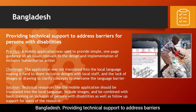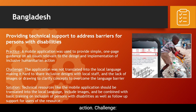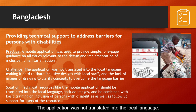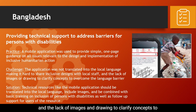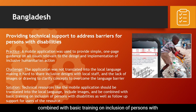Bangladesh — Providing technical support to address barriers for persons with disabilities. Practice: A mobile application was used to provide simple, one-page guidance on all issues relevant to the design and implementation of inclusive humanitarian action. Challenge: The application was not translated into the local language, making it hard to share inclusive designs with local staff, and lacked images and drawings to clarify concepts to overcome the language barrier. Solution: Technical resources like the mobile application should be translated into the local language, include images, and be combined with basic training on inclusion of persons with disabilities, as well as follow-up support for users of the resource.